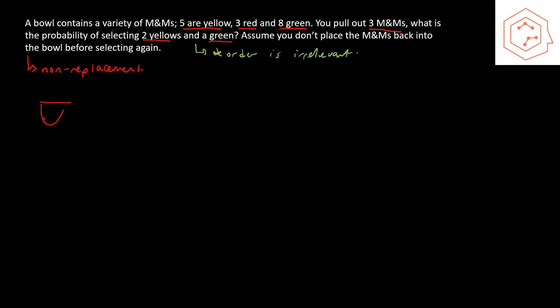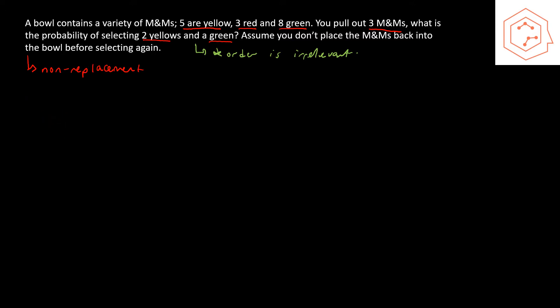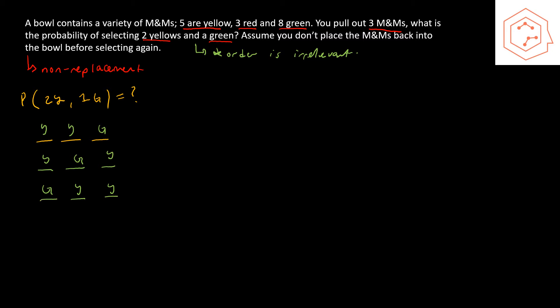We start with 16 M&Ms. We pull one out; on the second pull we only have 15 remaining, and the one we pulled is no longer a possible outcome. On the third pull, the first two are no longer outcomes. So the probabilities of pulling different M&Ms on successive trials change. The possible outcomes that satisfy our criteria are: yellow-yellow-green, yellow-green-yellow, or green-yellow-yellow.